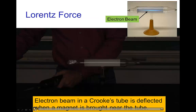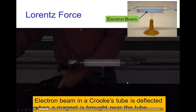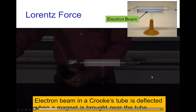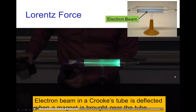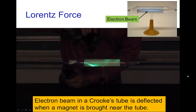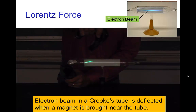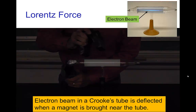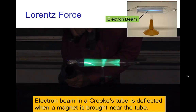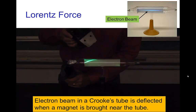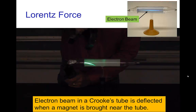Here's an example of this. I'm going to produce an electron beam in this Crookes tube, so you see that electron beam. And now I'm going to take this big horseshoe magnet, and you see how the beam gets deflected in all different directions by the magnet.